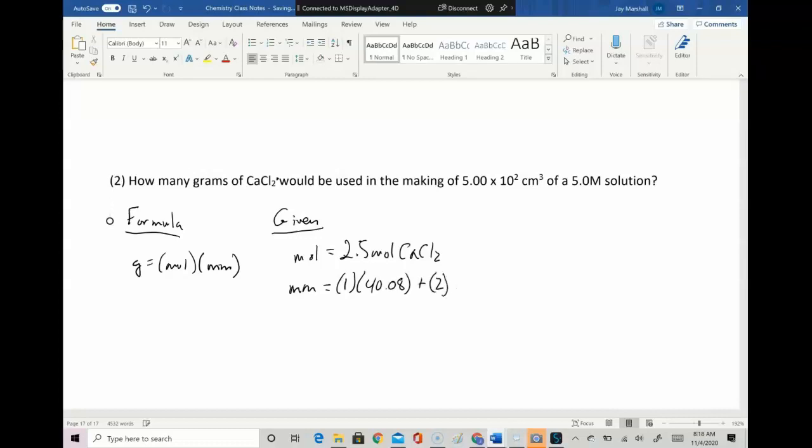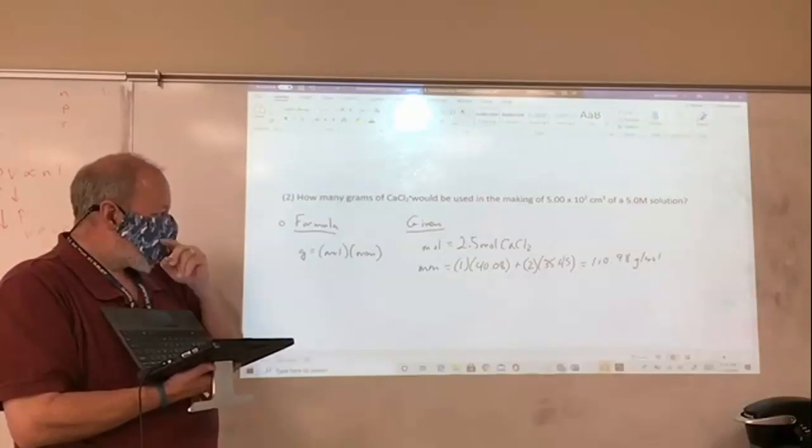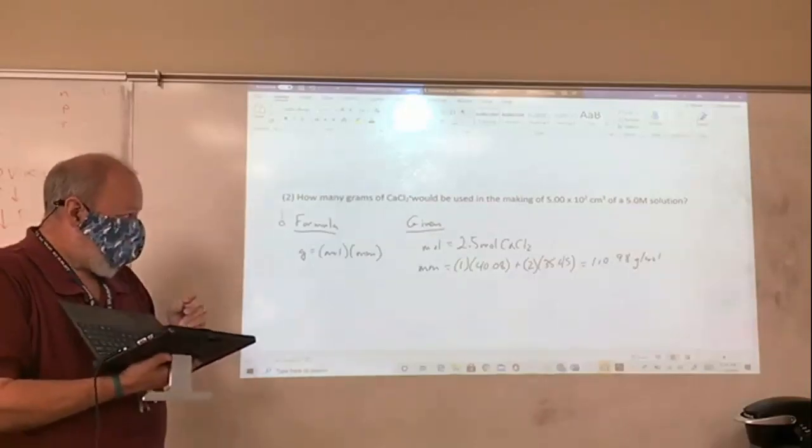And then I know that chlorine is 35.45. Because I've got two of those, I multiply that times 2. And so that's 70.90. And 40 would be 110.90, 110.98 grams per mole. I think that's right. And then I've got both things.